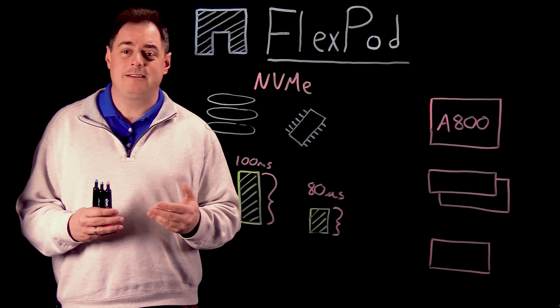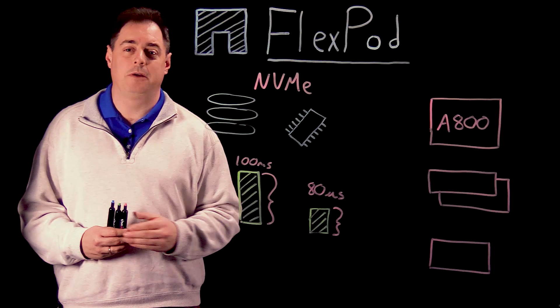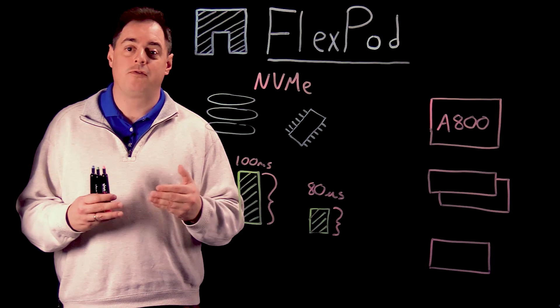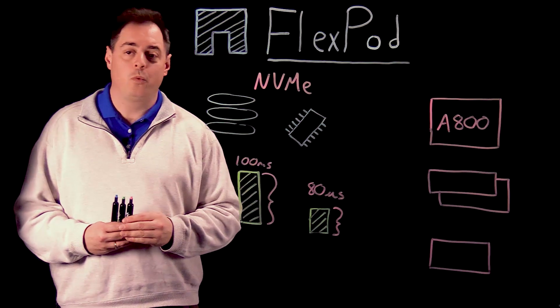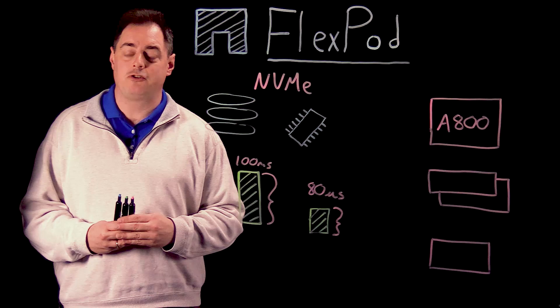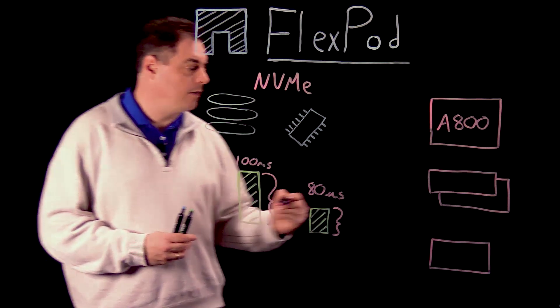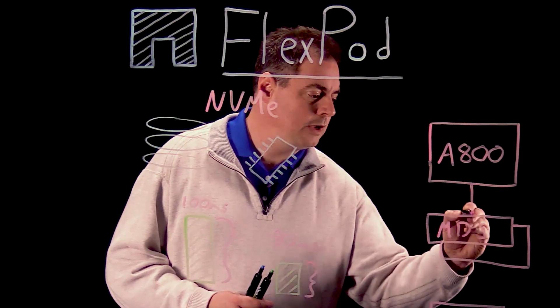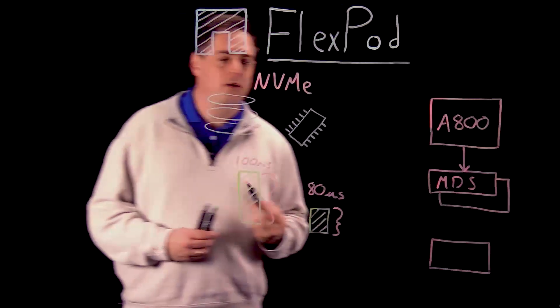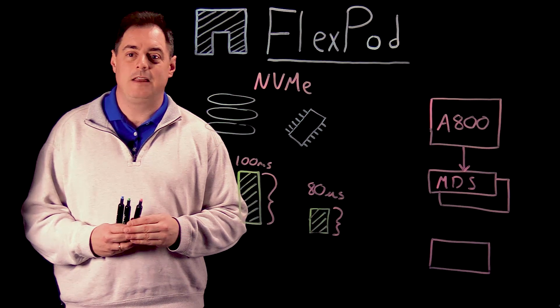But my application doesn't run on my storage. It runs across the network on a compute layer, so I have to be able to talk to it. That's where fabrics come into play. Specifically for FlexPod, we use NVMe over fiber channel or NVMe OF. We take advantage of the latest generation of Cisco MDS switches to ensure that our communication from our storage controller to the network can maintain that NVMe.